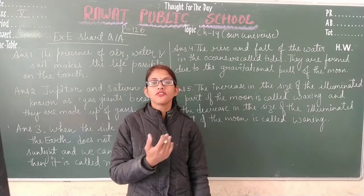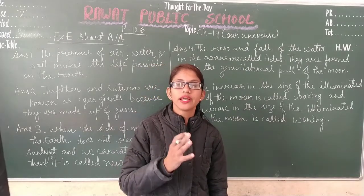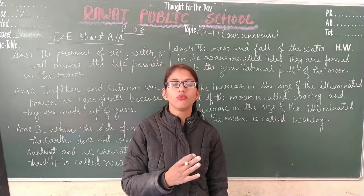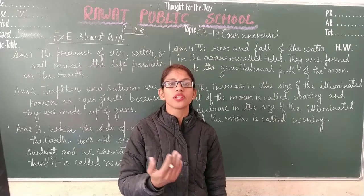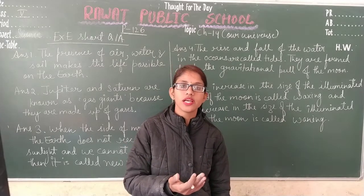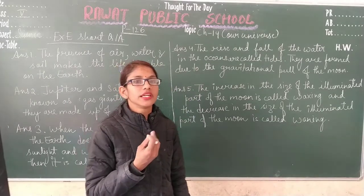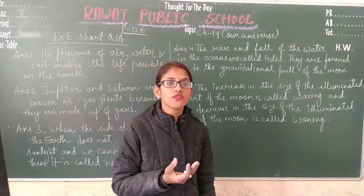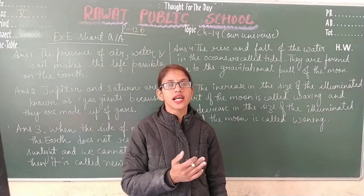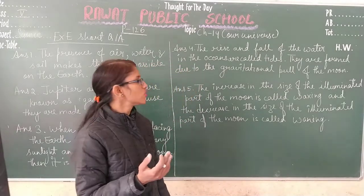After waxing, a full moon day comes. Then the full moon starts to decrease in size, and that is known as waning. So, the increase in the size of the illuminated part is known as waxing, and the decrease in the size of the illuminated part is known as waning.